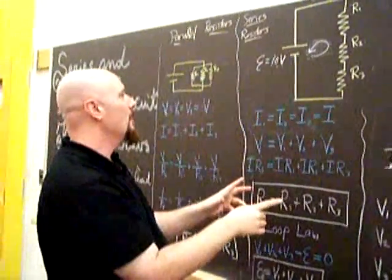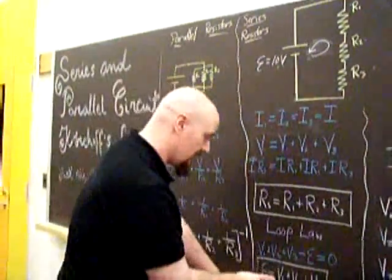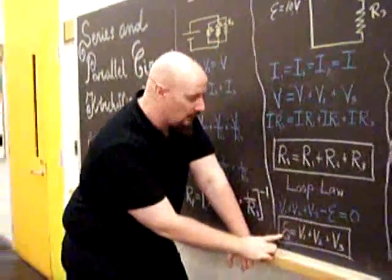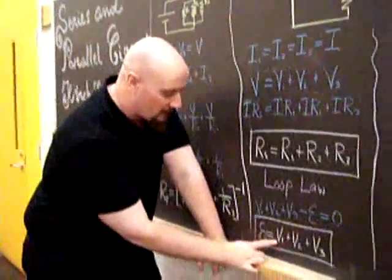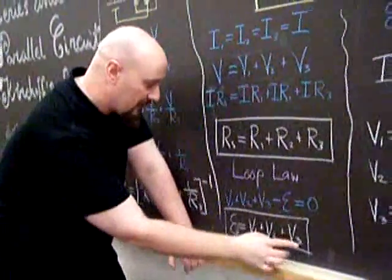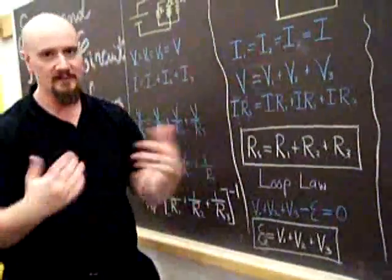Now, all three of these, if I set this EMF to 10 volts, when I directly measure V1 and then add it to V2, add it to V3, these three add together, it should be 10 volts.